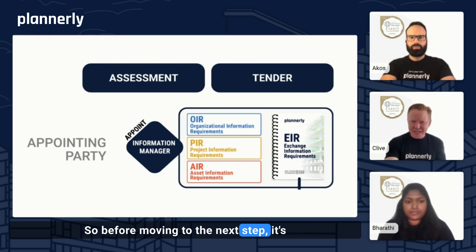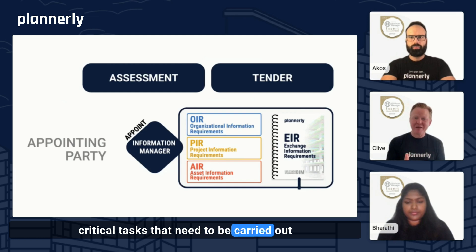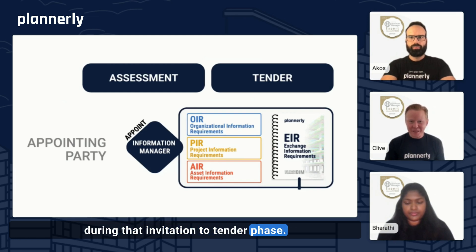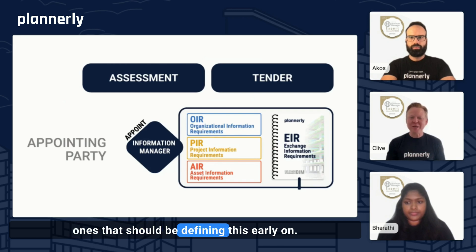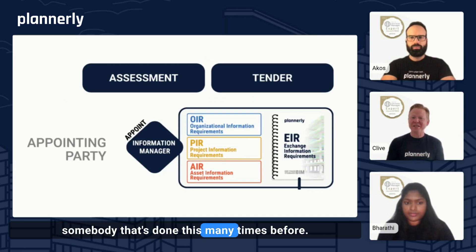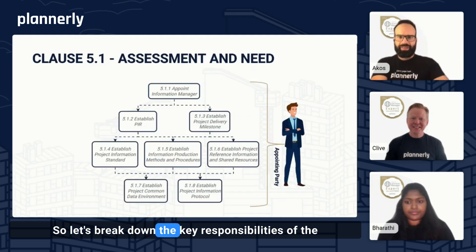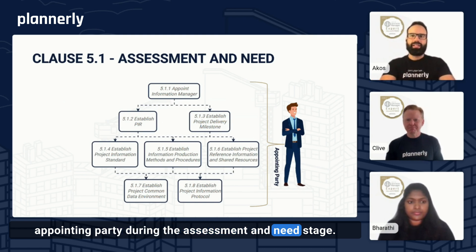Before moving to the next step, it's important to understand, according to ISO 19650, the critical tasks that need to be carried out during the invitation to tender phase. These are primarily responsibilities for the appointing party — the client, the person that's paying the bill. They're the ones that should be defining this early on, often with assistance from a consultant or somebody that's done this many times before. Let's break down the key responsibilities of the appointing party during the assessment and need stage.